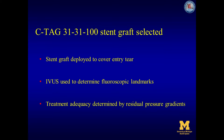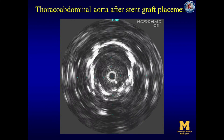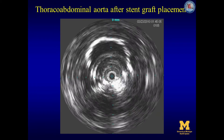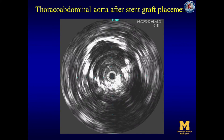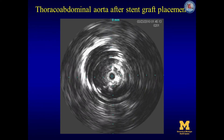A Gore CTAG device of 31 millimeters diameter and 100 millimeters in length is selected. The stent graft is deployed to cover the entry tear while intravascular ultrasound is used to determine fluoroscopic landmarks. After stent graft deployment, residual pressure gradients determine treatment adequacy. IVUS now entering the stent graft shows that it covers only the entry tear and stops short of the visceral segment.